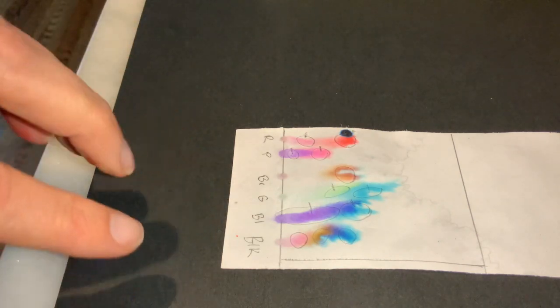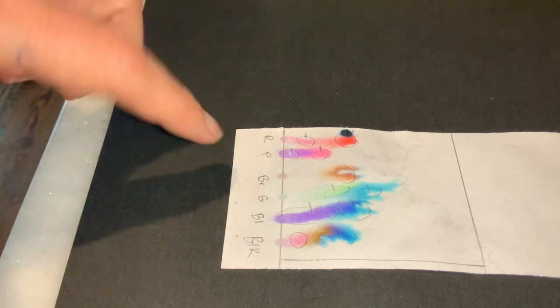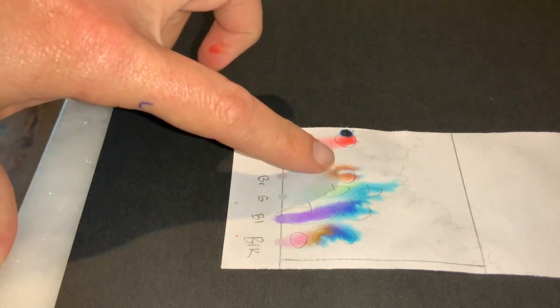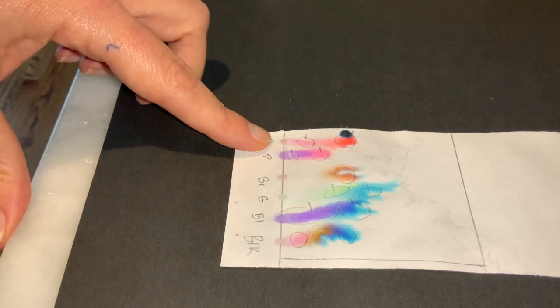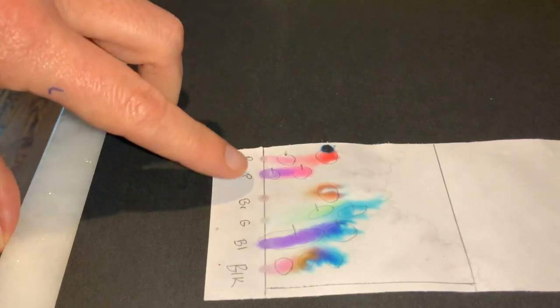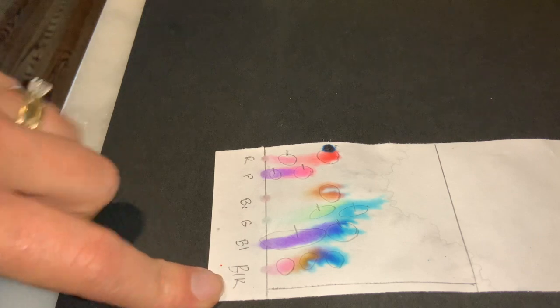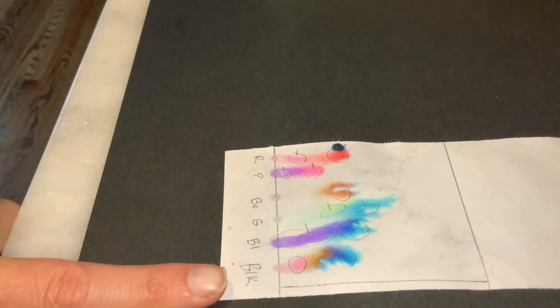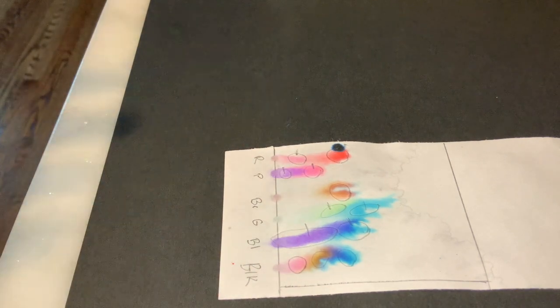And so for each ink color, you're going to have, except for the brown that only had one color in it. So red, you're going to have two different RF calculations. Purple, two different. And get to that black, you're going to have three different ones. And so you'll record all of this in your data tables.